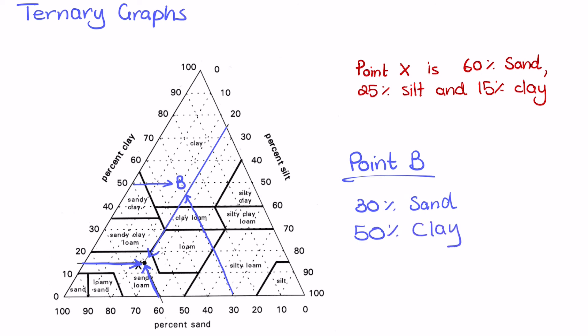And for the last one for silt, if we follow it down there, it's about 20% silt. And we can double check our answer again, just by adding all these up. So 30, 50, 20, that equals 100%. So again, that just confirms that we got the right values for point B, or at least just reassures us that we got the right values.